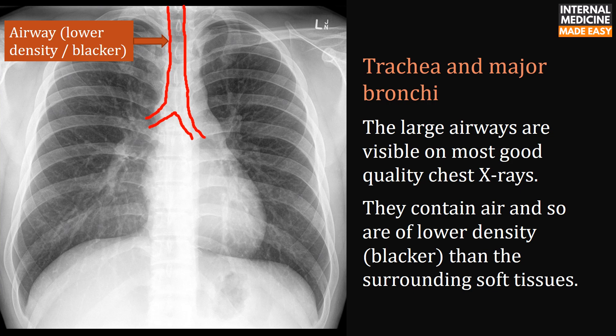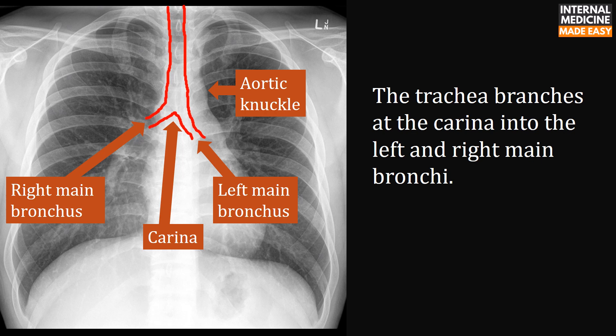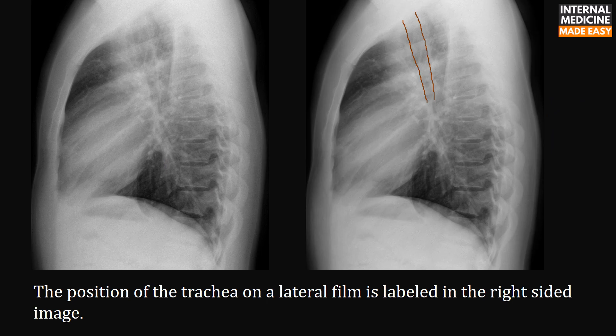The large airways — trachea and major bronchi — are visible on most good quality chest x-rays. They contain air and so are of lower density (blacker) than the surrounding soft tissues. The trachea is usually placed just to the right of the midline as it passes to the right of the aorta, but can be pathologically pushed or pulled to either side. The trachea branches at the carina into the left and right main bronchi. The position of the trachea on a lateral film is labelled in the right-sided image.